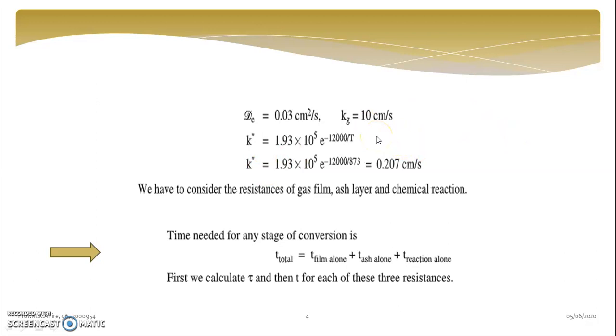Which are the resistances present? First is a gas film resistance, second is an ash layer resistance, and third is chemical reaction resistance. Now here we want to find the time required to have 98% of the reaction. So it means we have to estimate T. But can we estimate T directly? No.